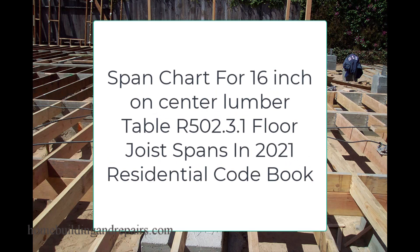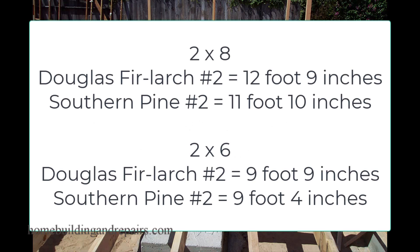Now let's check it with the span chart from the 2021 Residential Building Codebook, looking at lumber spans for 16-inch on-center lumber. For 2 by 8 Douglas fir, the span is 12 foot 9 inches, and for Southern pine number 2 it will be 11 foot 10 inches. For 2 by 6 Douglas fir number 2 grade — these are all number 2 graded lumbers, which is more of a construction standard in most areas.